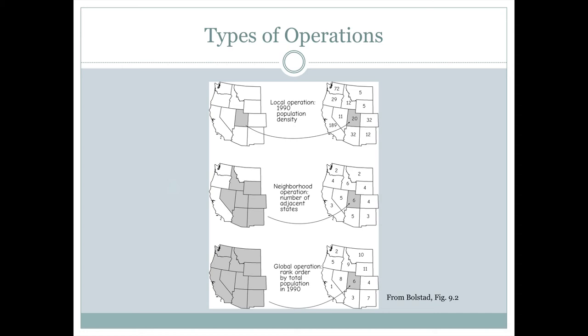And then for a global operation, we're taking into account all of the polygons in the data set. In this example for the western United States,